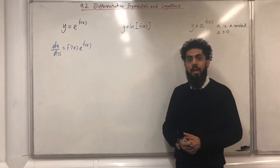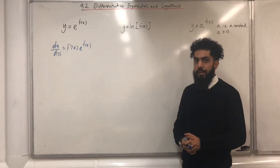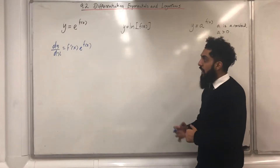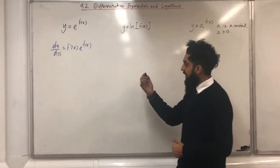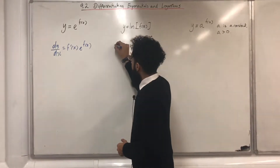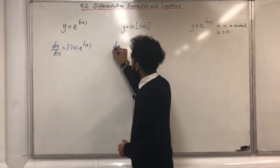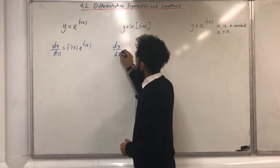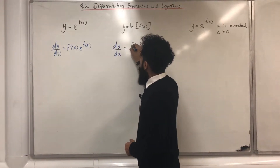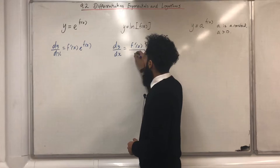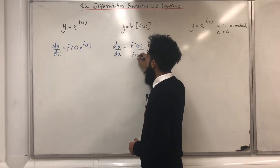If you've got y equal ln of f(x), then dy/dx is given by f'(x) over f(x).